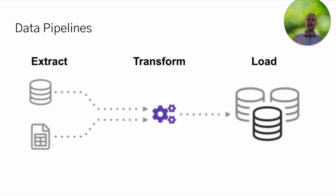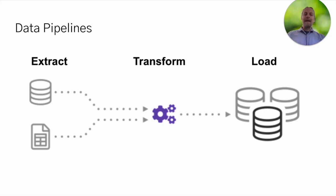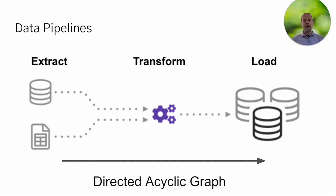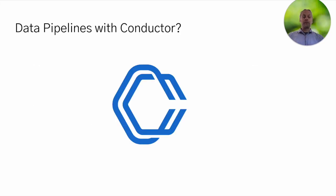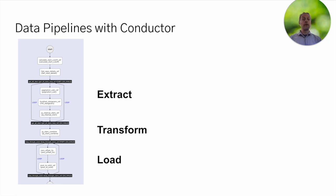Let's talk data pipelines. We're going to talk about ETL pipelines — extracting data from some resources, transforming it, and then loading it into another resource. We're going to build an ETL pipeline with Netflix Conductor. It's a really simple, basic ETL pipeline because these can get really complicated, as I'm sure you all know. The great thing about ETL pipelines is that they're DAGs — directed acyclic graphs — and Conductor is built as a DAG. So you can see how we're going to fit these all together.